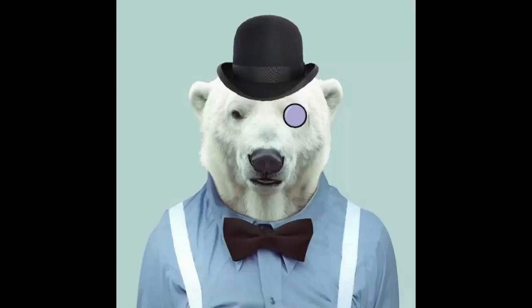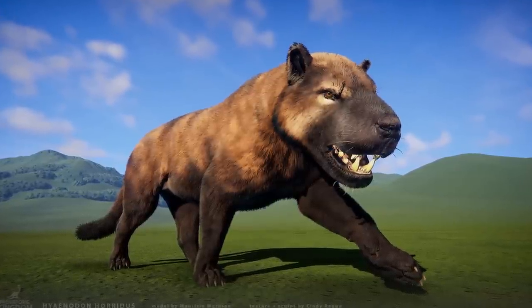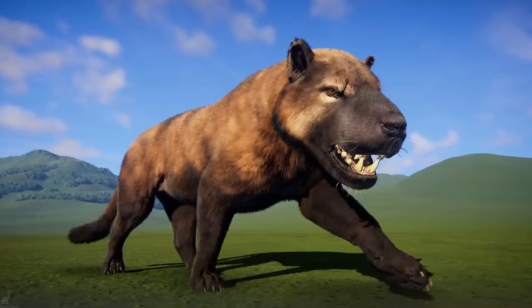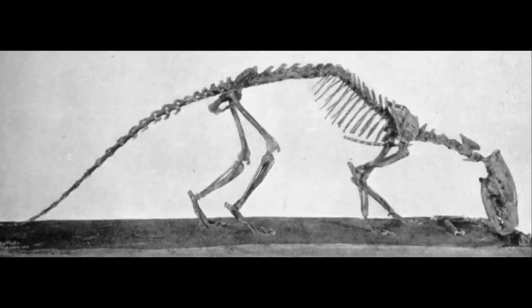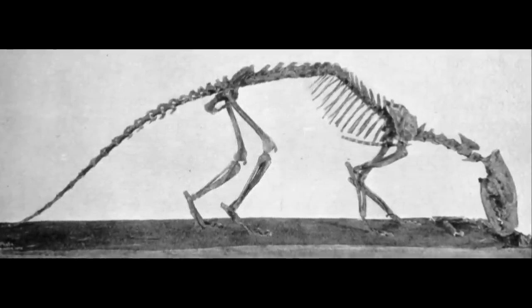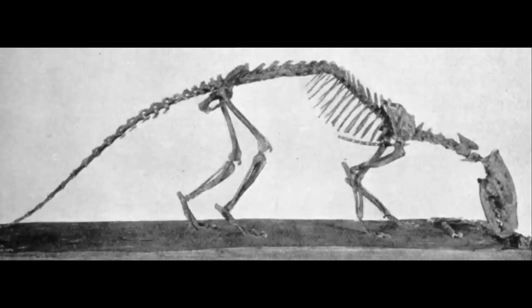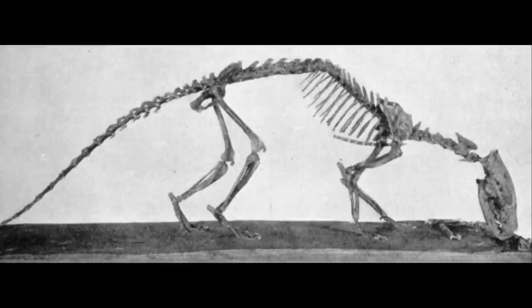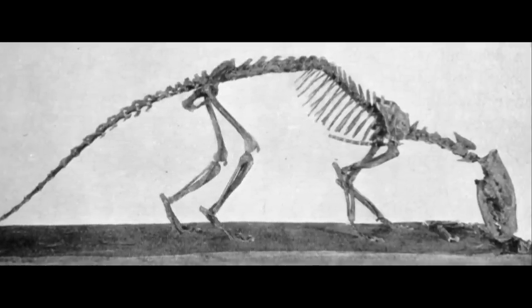Hello everyone, Dr. Polaris here. After the extinction of the non-avian theropod dinosaurs at the end of the Cretaceous, various groups of carnivorous mammals would emerge to fill the vacated niches. Among the most notable of these was an extensive clade known as Pan-carnivora, a Laurasian Therian lineage that contained the superficially cat-like Oxyaenids, the familiar Carnivorans, and the subject of today's video, the Hyenodonts.